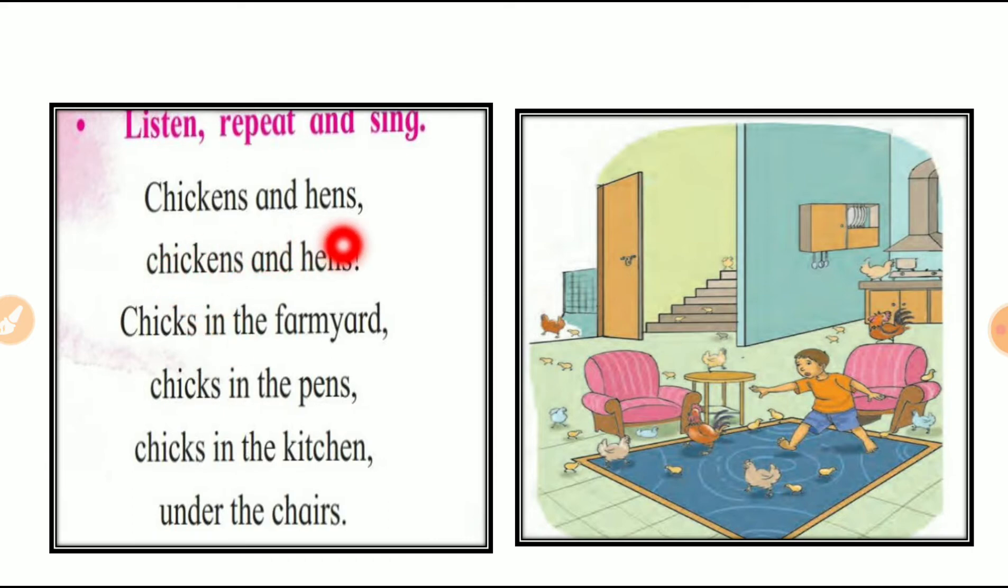So, chickens and hens. Chickens and hen. Abhiy aap nai suna tha ki jay joh hen hoota hai, uske joh bachche hoote hai, unko kya bolet hai? Chicken. Chicken. Murgi aur murgi ke pachche. Chicken. Chicks in the farm yard.